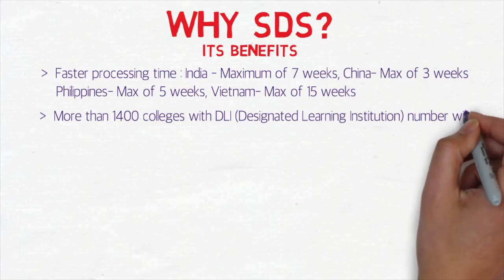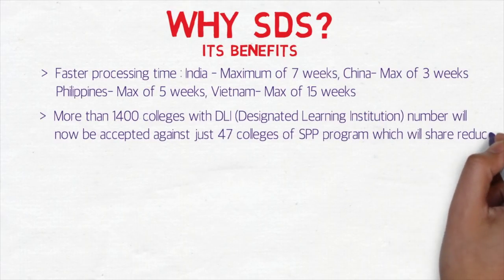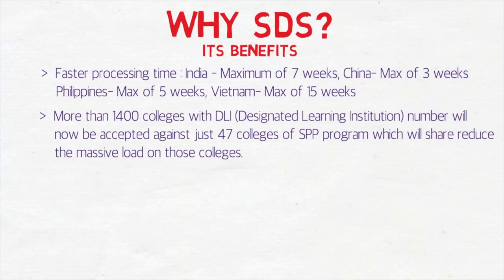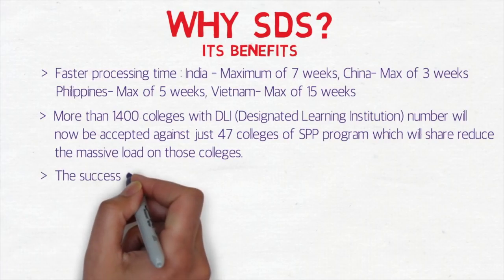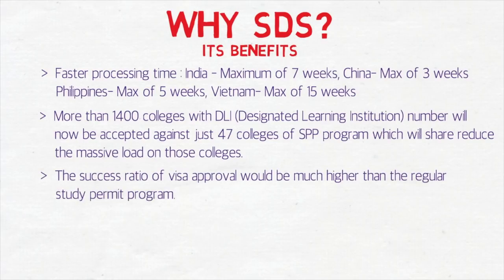Another big reason is the number of colleges. More than 1,400 colleges with a DLI number will now be accepted, compared to just 47 colleges under the SPP program. The DLI number is the Designated Learning Institution number — all colleges in Canada holding this number will be eligible under SDS. This will reduce the massive load on those 47 overcrowded SPP colleges. The visa approval success ratio would be much higher than the regular study permit — around 75% approval compared to the previous 50/50 rate.